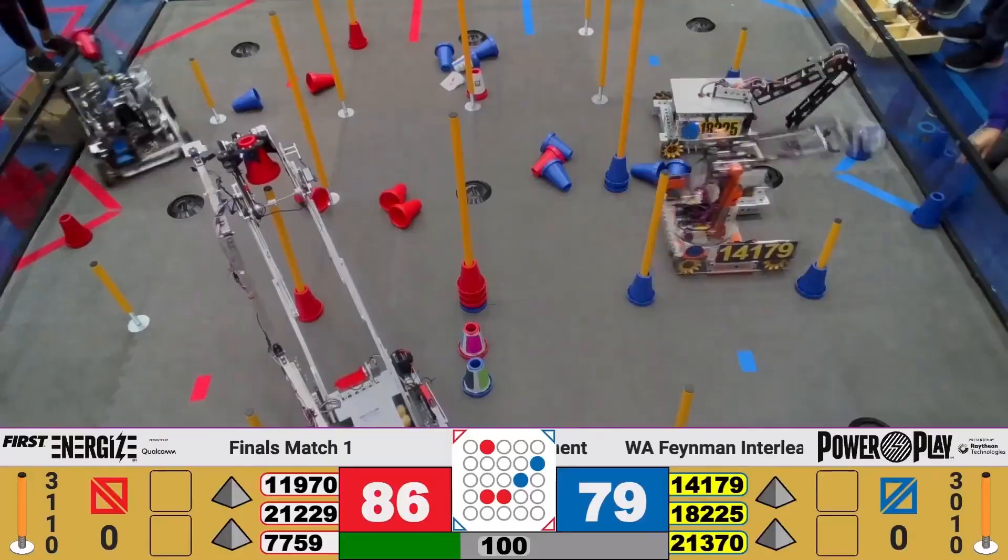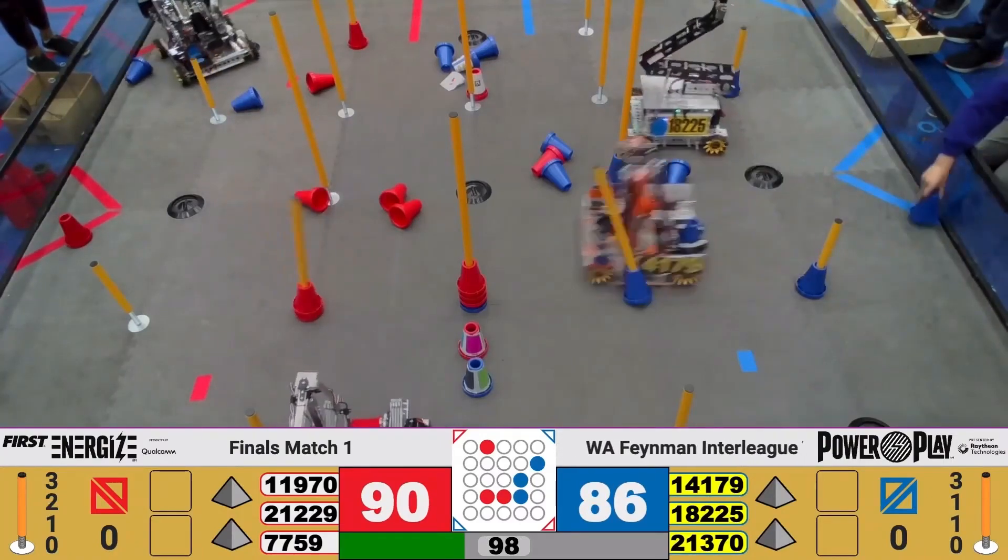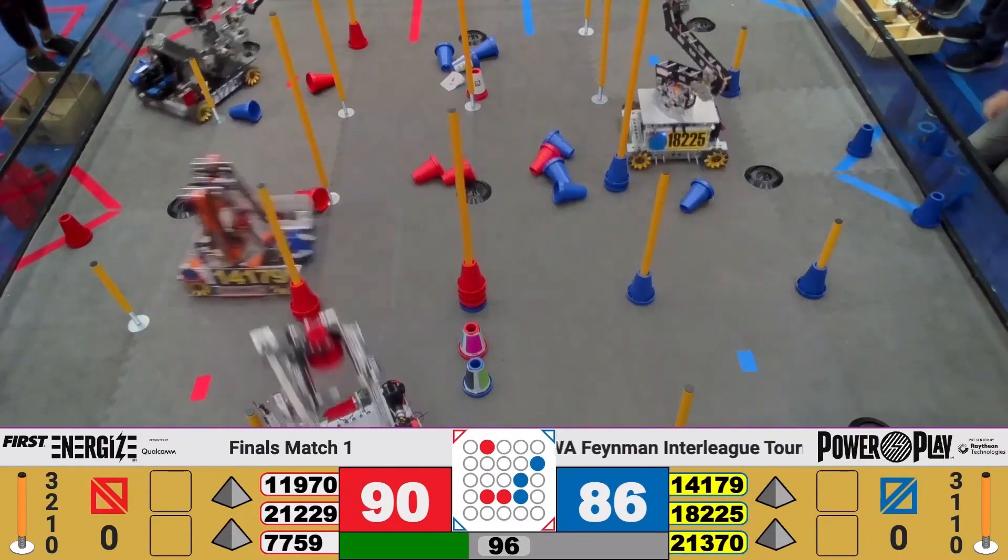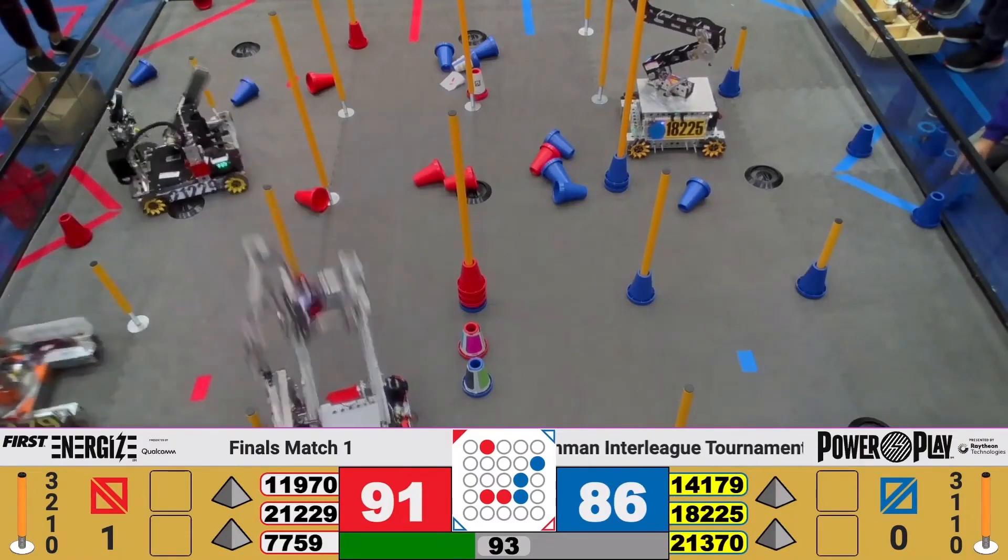Sure. And so this is definitely a very unique design. I think one of the first very successful pick and place type robots we saw was Snap last year for Freight Frenzy. And then now you guys are coming out with this design as well as one or two other teams. So what inspired you to go for something this complex with this many degrees of freedom?